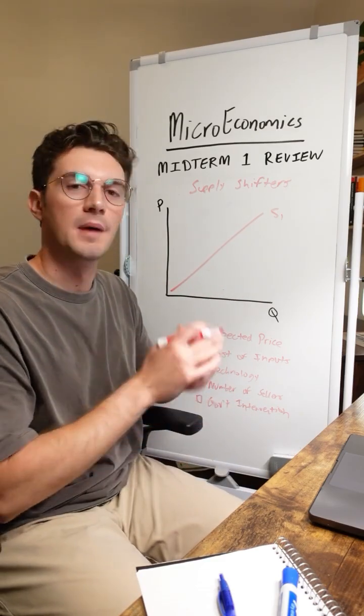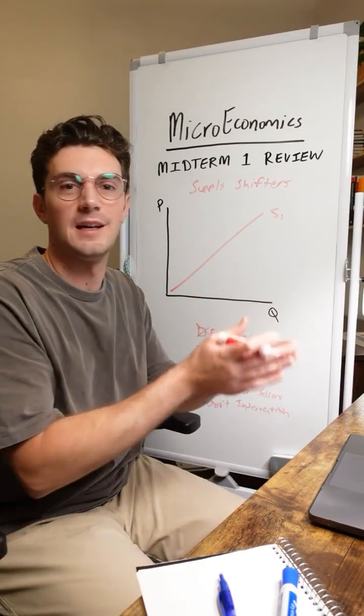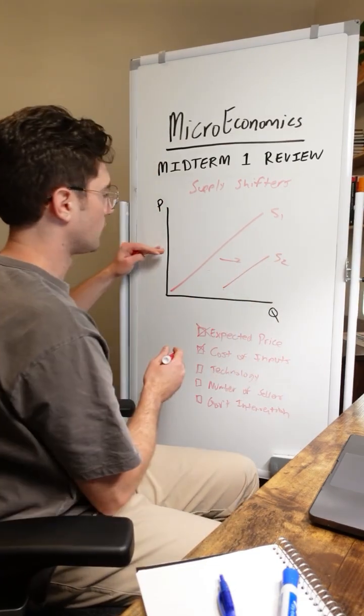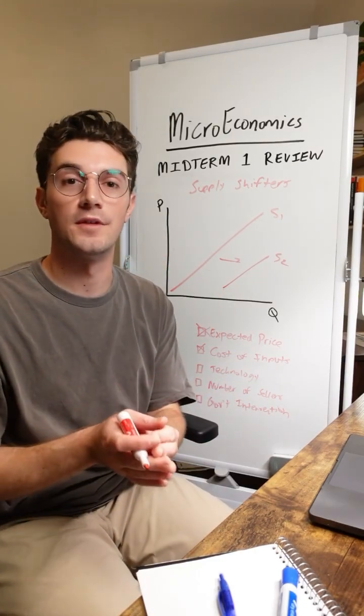All right, next up here, technology. If better technology becomes available for you to output more units of the good and be more efficient doing so, well then we're going to shift supply to the right. You're able to output more units of the good at the same price as before because the technology is making you more efficient.